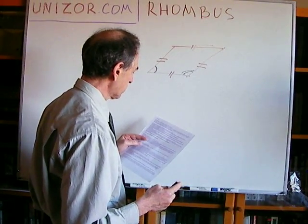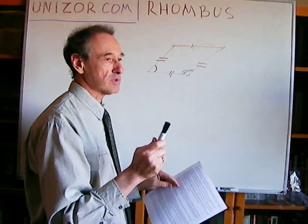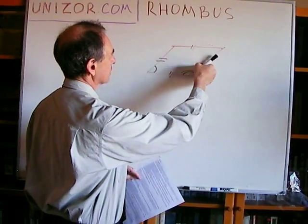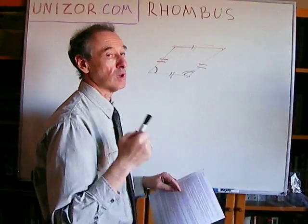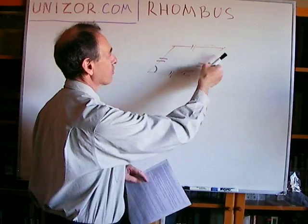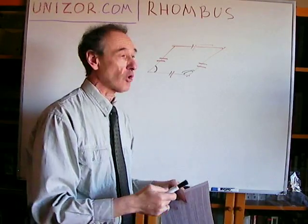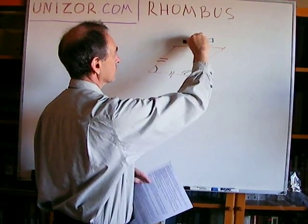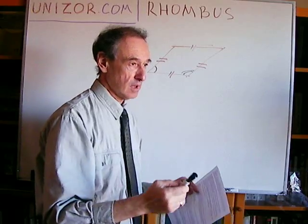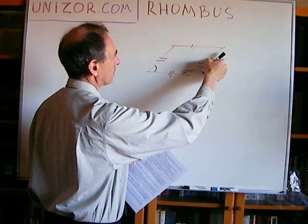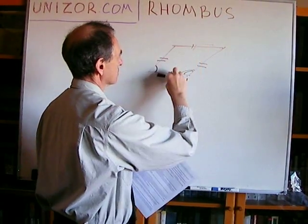Opposite parallel sides are congruent. From the definition of the parallelogram — that opposite sides are parallel to each other — we have proven that opposite sides are also congruent. In a rhombus, we bring it further by defining a rhombus as having not only those opposite pairs congruent, but all four sides equal as well. That's the definition of the rhombus, but the property of the parallelogram that opposite sides are congruent still holds.